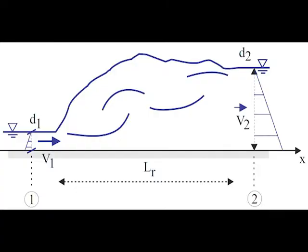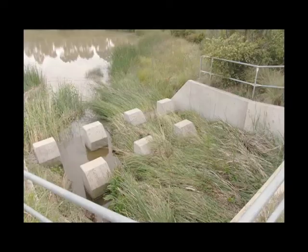For a hydraulic jump in a smooth, horizontal, rectangular prismatic channel, the application of the continuity and momentum equations yields a classical equation called the Bélanger equation, linking the ratio of the conjugate depth to the inflow Froude number.